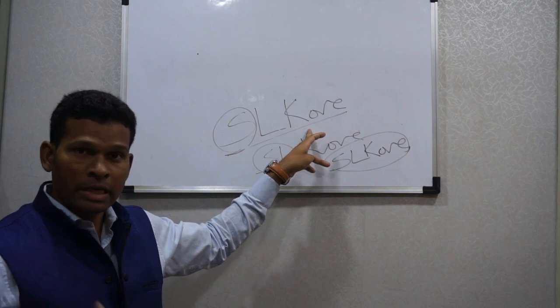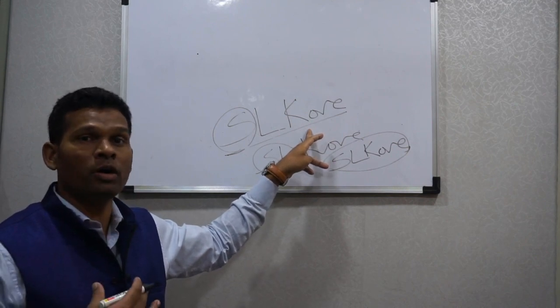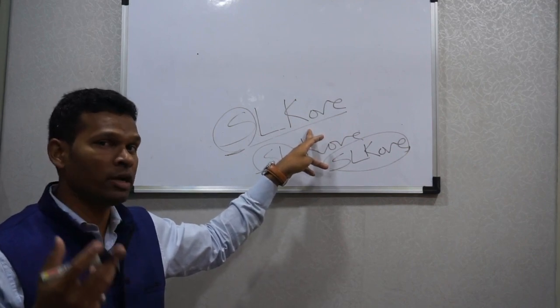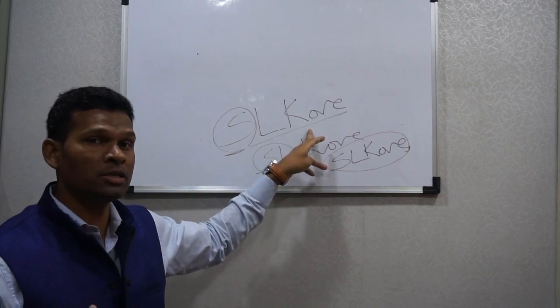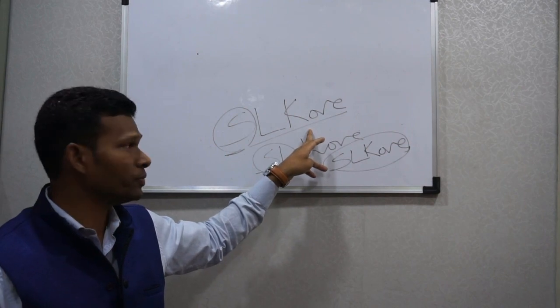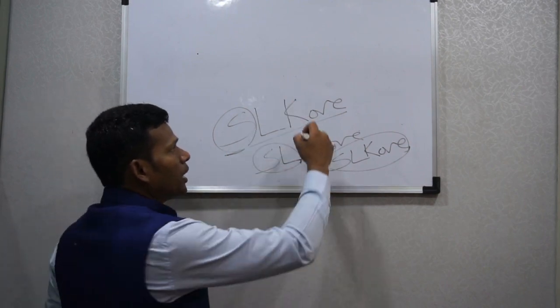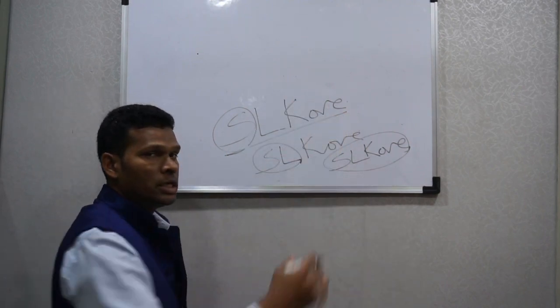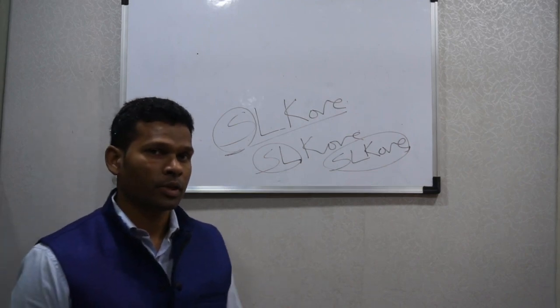The third part relates to himself as a son to his mother, and also represents his wife, his children, and the way he will behave as an emotional person. The remaining part indicates the way he will occupy his time. These are the three parts of the signature.